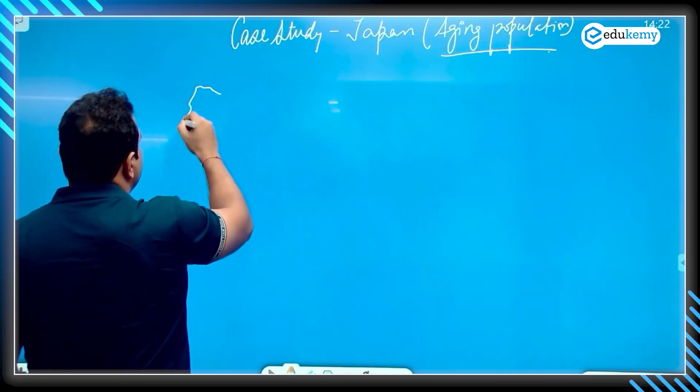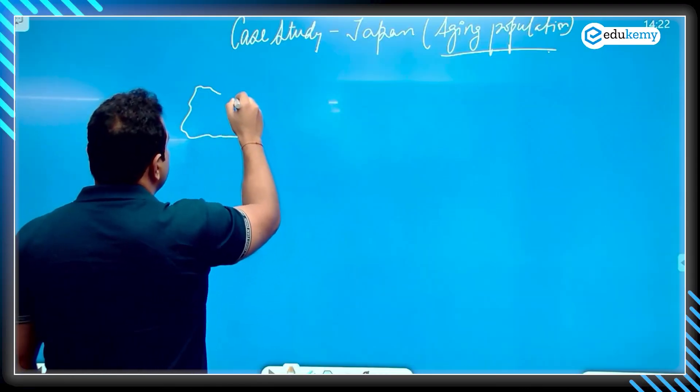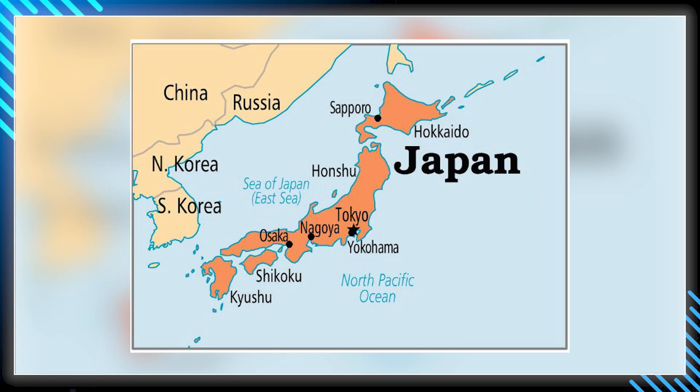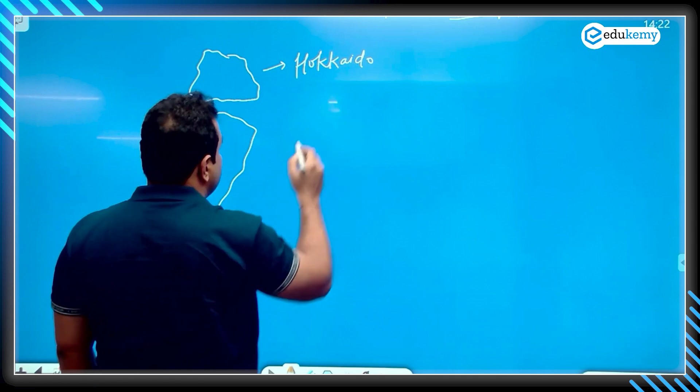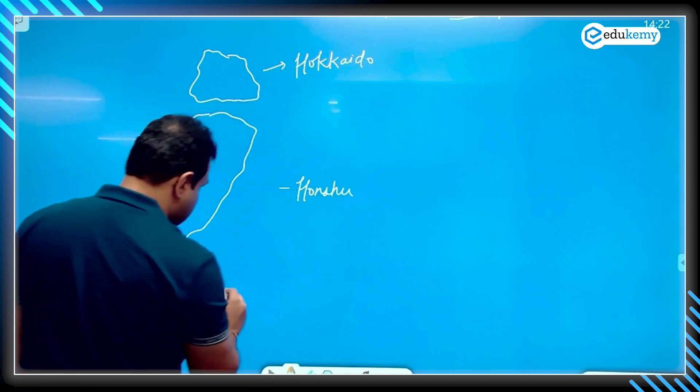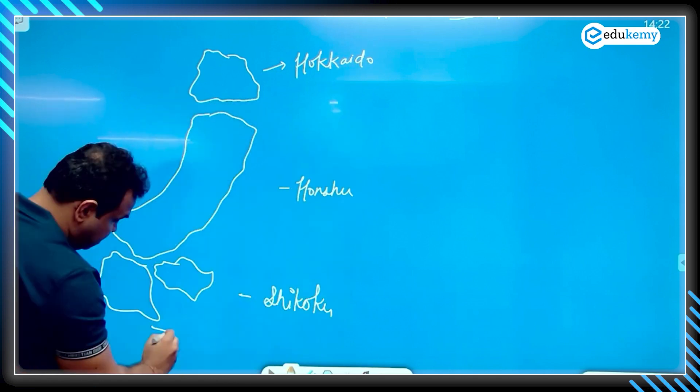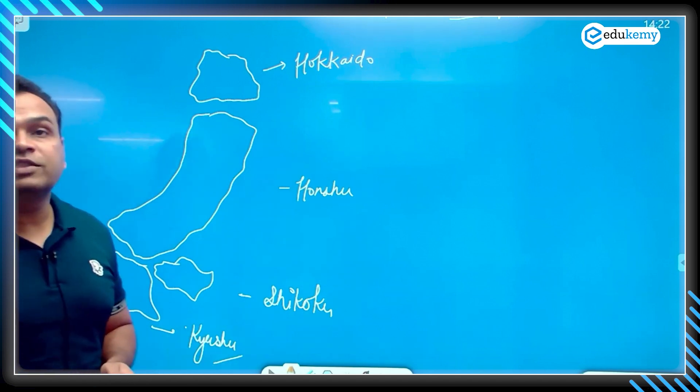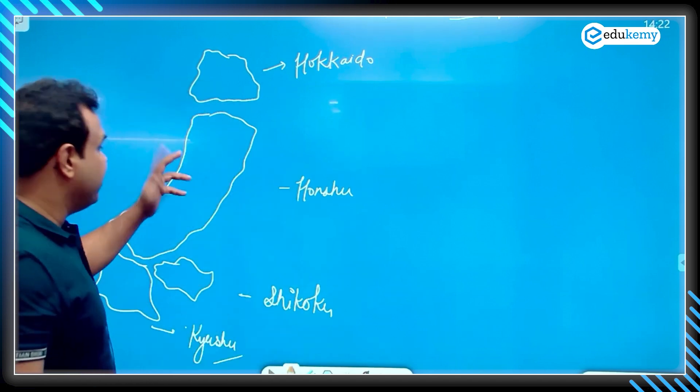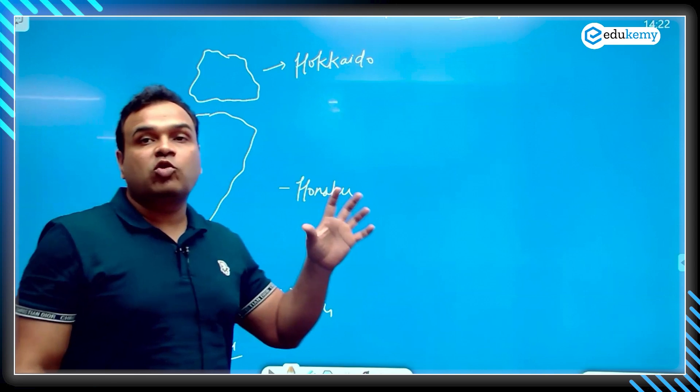Drawing a rough map of Japan. Japan is an archipelago of more than 3000 islands, but the major ones are four. This is Hokkaido, this one is Honshu, this one is Shikoku, and the southernmost is Kyushu. These are the four major islands.